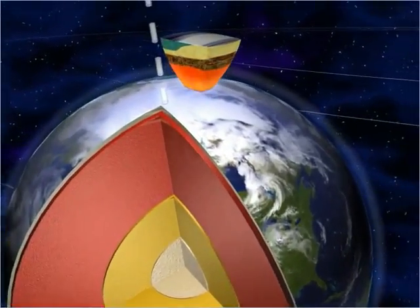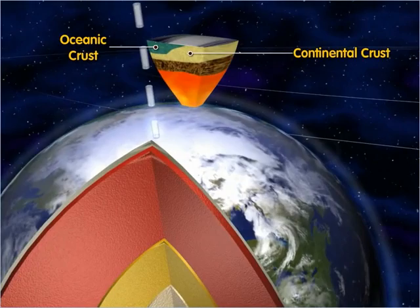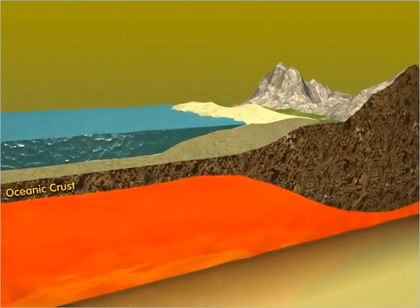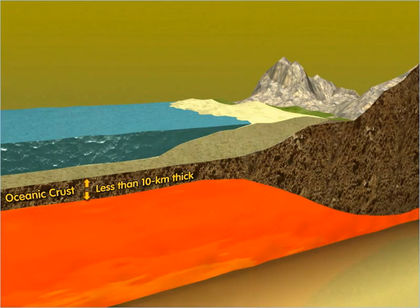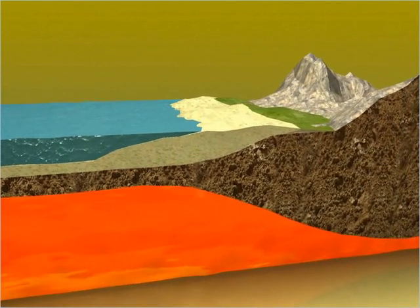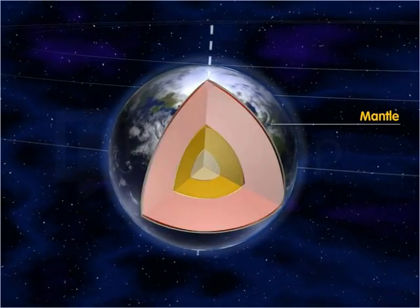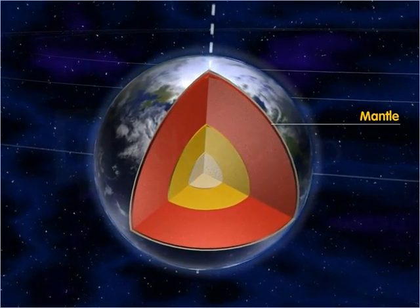The crust consists of two parts: oceanic crust and continental crust. The oceanic crust is less than 10 kilometers thick, while the continental crust is about 35 to 40 kilometers thick. Below the crust lies the mantle, made up of rocks.